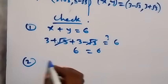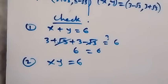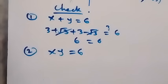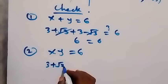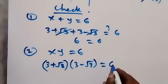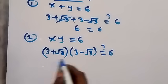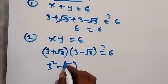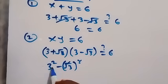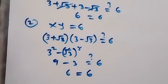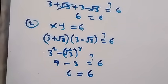Checking equation two: x times y should equal six. Multiplying (three plus root three) by (three minus root three) — these are conjugates, so using the difference of squares formula: three squared minus root three squared equals nine minus three, which equals six. This confirms our solutions are correct.